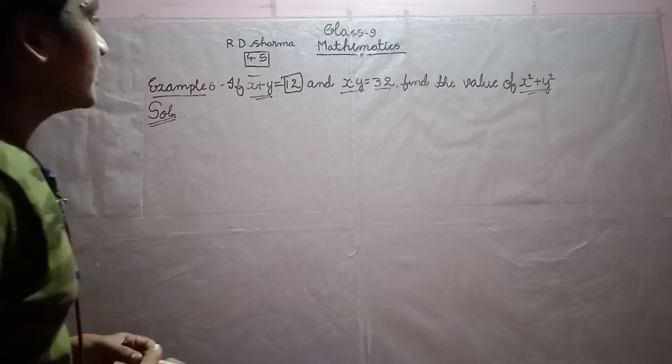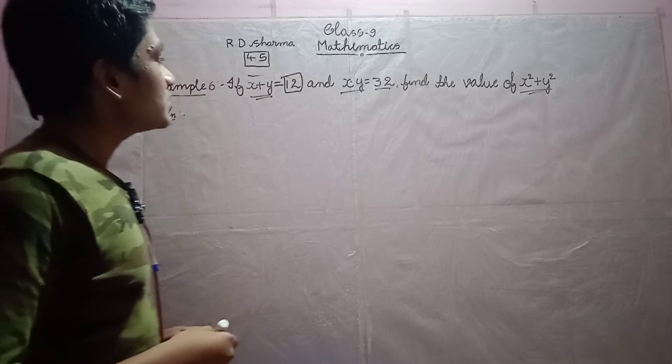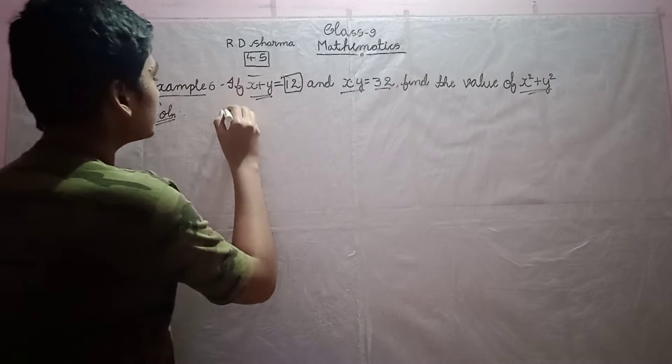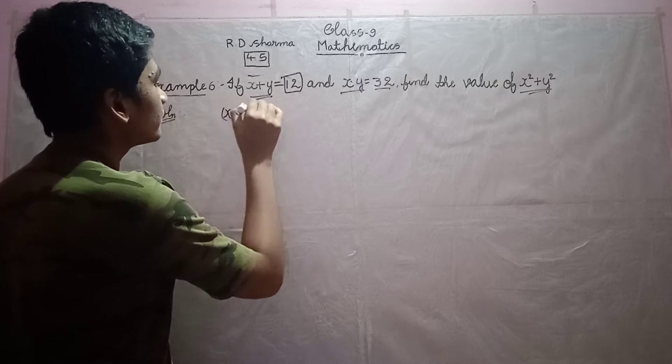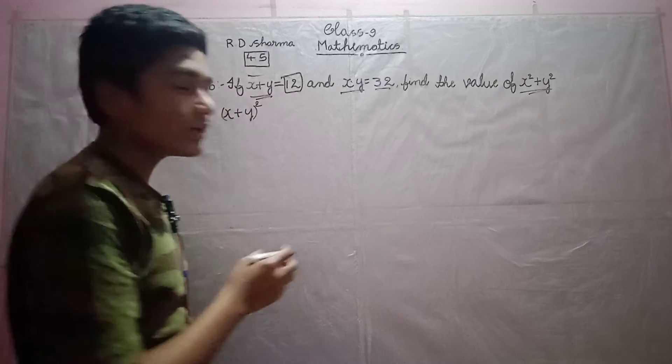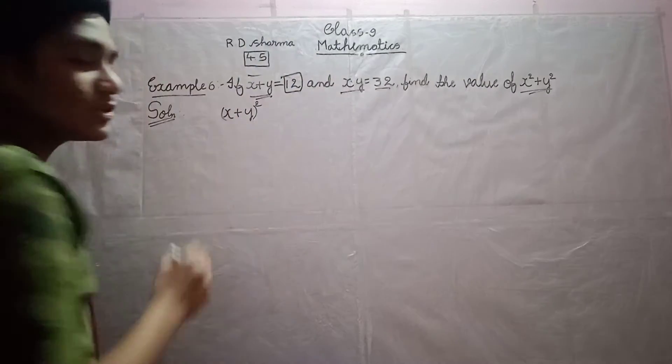Let us find. This is pretty easy to solve. So, what is the first step? Square this x plus y, so that you can substitute this 12 in the place of x plus y.